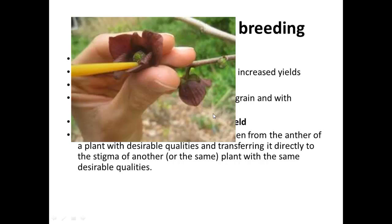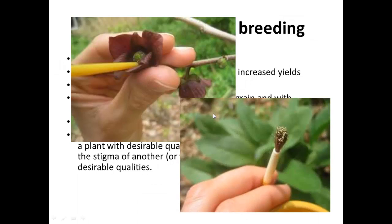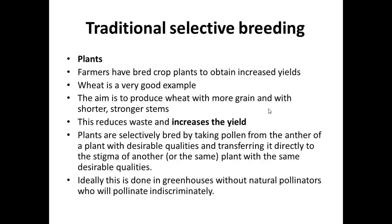Quite simply, you take a paintbrush, dig it into the anthers, and you can see a whole load of pollen on the tip of the brush. That pollen can then simply be brushed onto the stigma of another plant — and therefore you're choosing exactly which plant breeds with which plant. Ideally you do this in a greenhouse, because out in the environment there are lots of pollinators around that would pollinate indiscriminately, so you can't control which plant is fertilized by which pollen.